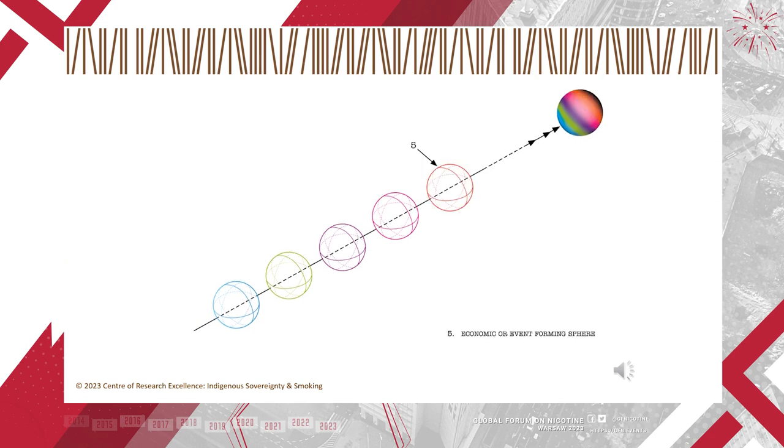The economic or event-forming sphere is about the formation of facts and setting goals. For example, a goal might be to discourage uptake of vaping out of a fear of long-term health risks to teenagers or a desire to protect cigarette tax revenue. Worldly debate that is informed by science, whether legitimate or pseudo, exists almost entirely in this sphere.